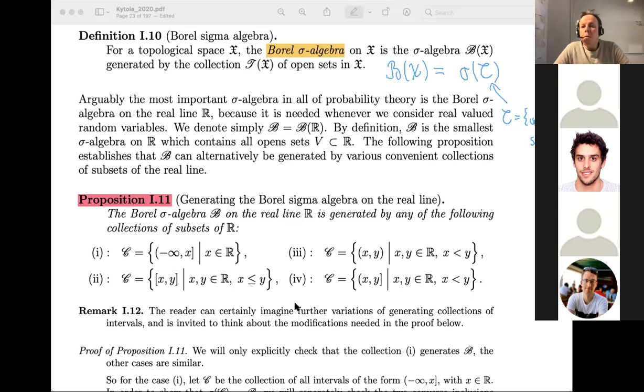The proposition below says that the same sigma algebra can be generated with lots of different collections. The open sets generate some sigma algebra, but we could ask: what sigma algebra is generated by the closed sets of the real line? The answer is the same sigma algebra, the same Borel sigma algebra.